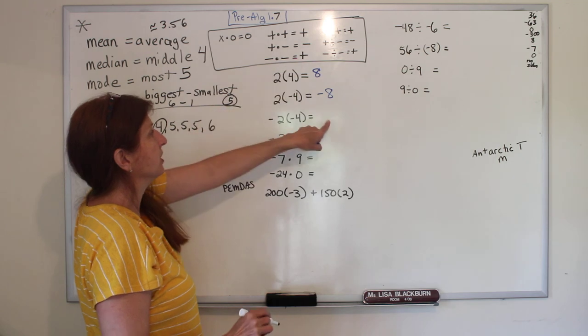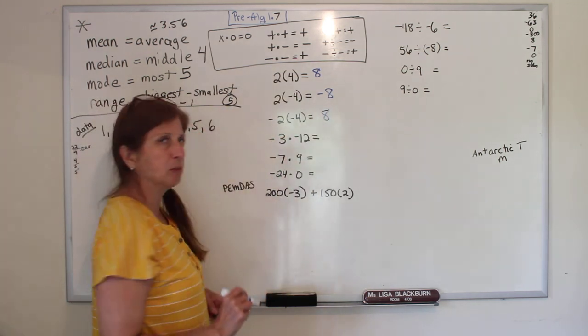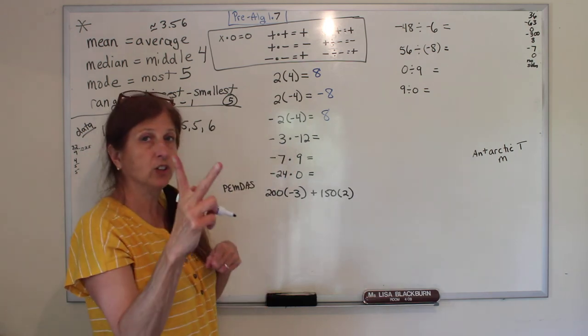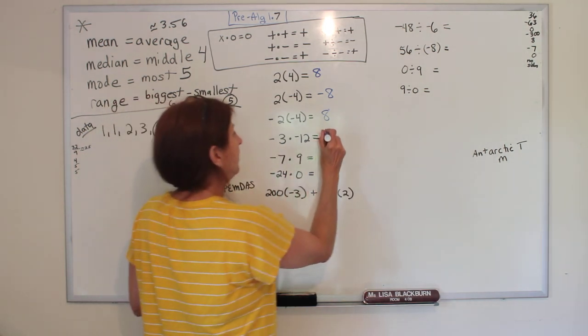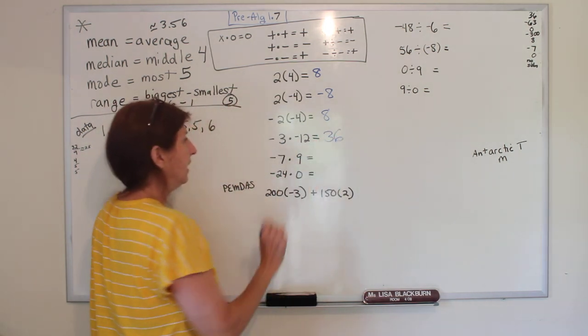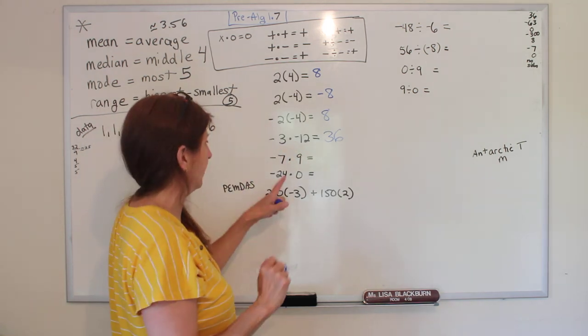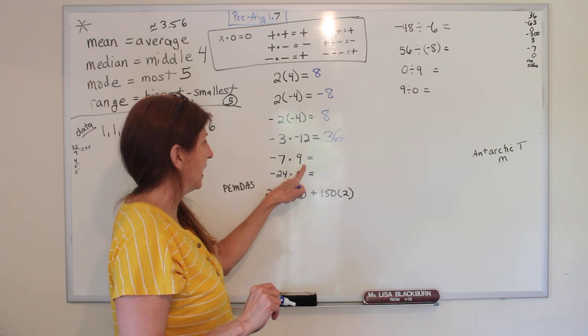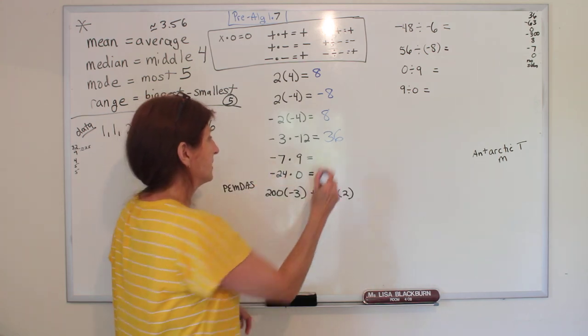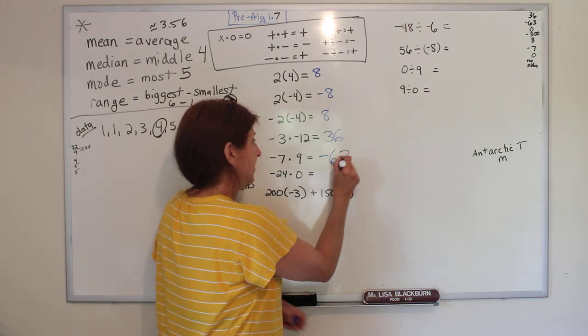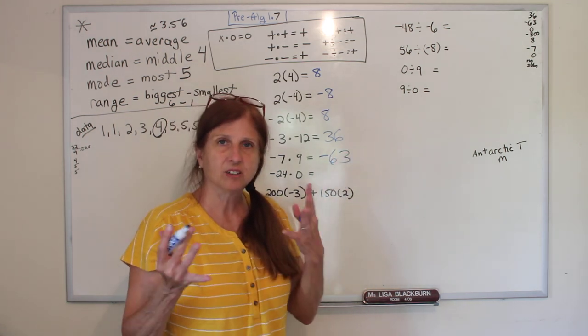Okay, negative 3 times negative 12, two negatives make a positive 36. 3 times 12 is 36, if you didn't know that, do it on your calculator. 7 times 9, we have one negative and one positive, so it's going to be negative, and 7 times 9 is 63. And if we're in class, I'd show you a little trick to remember that, but we don't have time.